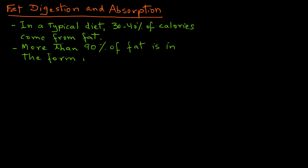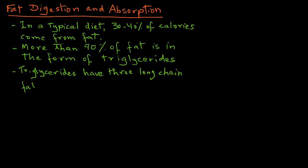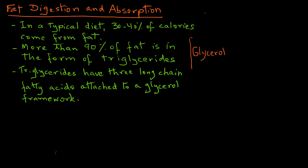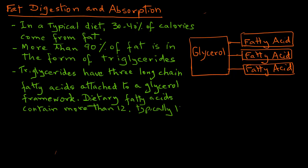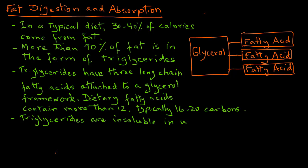More than 90 percent of the fat is in the form of triglycerides. Triglycerides have three long-chain fatty acids attached to a glycerol framework, as we can see in this schematic. The dietary fatty acids typically contain more than 12, often 16 to 20 carbons. Triglycerides are insoluble in water, and that is what makes the digestion and absorption of lipids different from other macromolecules such as proteins and carbohydrates.